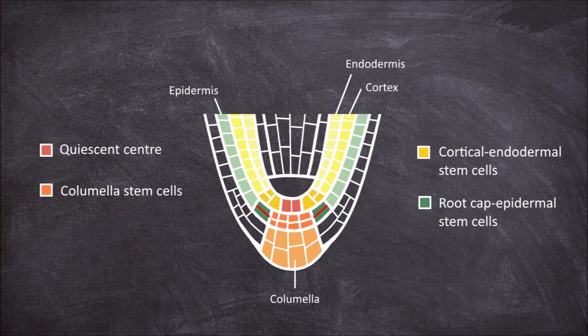They also undergo periclinal cell division with these daughter cells later undergoing anticlinal cell division to form the lateral root cap. The last region is the stele stem cells.